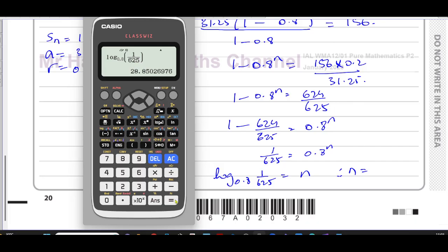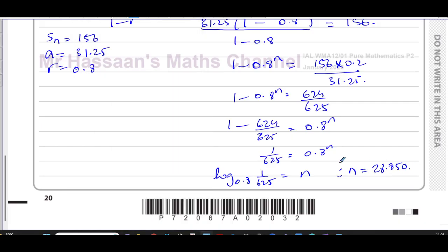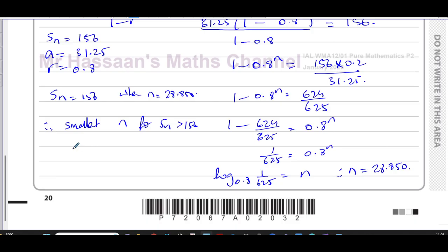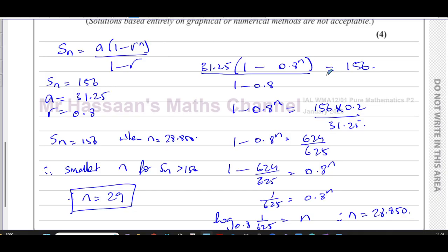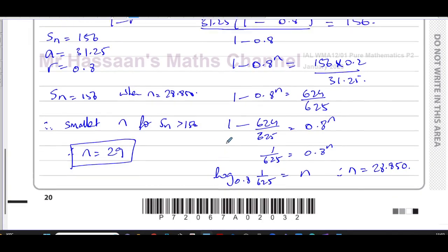That gives n equals 28.850. So the sum equals 156 when n equals 28.850. Therefore the smallest integer n for which the sum is greater than 156 is n equals 29. The sum of the first 28 terms is less than 156, but the sum of the first 29 terms exceeds 156, since n must be an integer and we round up to the next whole number.